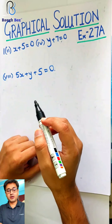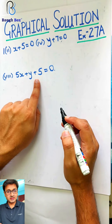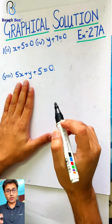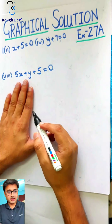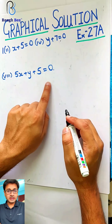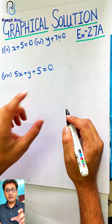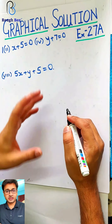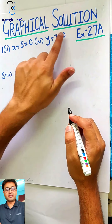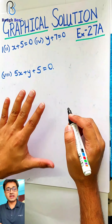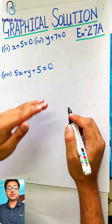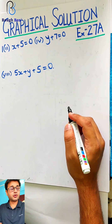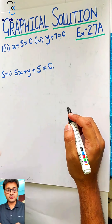Coordinate geometry — if you remember, equations were given to us like this. Using such equations, we used to get three points, plot them on the graph, and draw a line. So basically, one linear equation is given to us. We use that linear equation and try to plot the same on the graph — exactly the same as graphical solution. In fact, this is a very simple topic since you've already finished coordinate geometry.